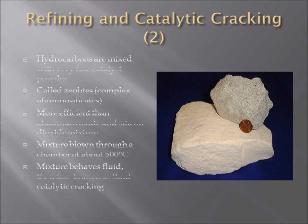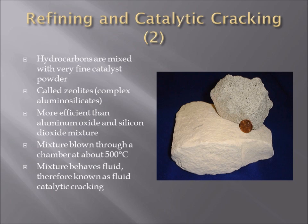In catalytic cracking, the hydrocarbons are mixed with a very fine catalytic powder called zeolites, as shown on the right-hand side. These new catalysts used nowadays are more efficient than the old mixtures of aluminum oxide and silicon dioxide. The whole mixture is then blown like a liquid through a reaction chamber at a temperature of around 500 degrees Celsius. Since this mixture behaves like a liquid, this process is also known as fluid catalytic cracking.